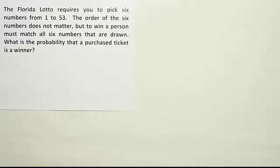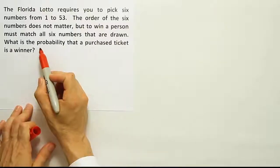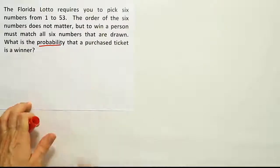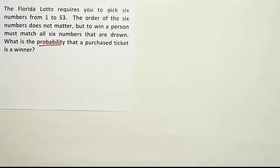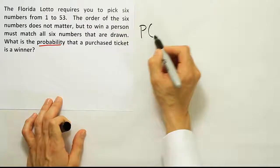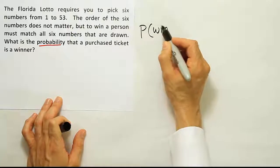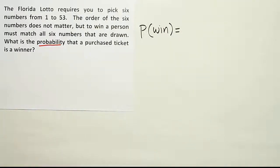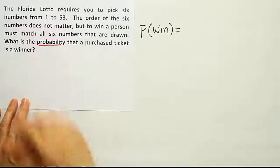Okay, so this is a probability question. I can see that by this statement: What is the probability? Probably that a purchased ticket is a winner. So the probability that a ticket is a winner - it's a probability of a win when buying a single ticket. So it's a basic probability problem essentially. The probability that a ticket purchased is a winner.